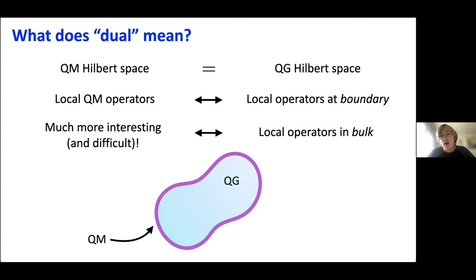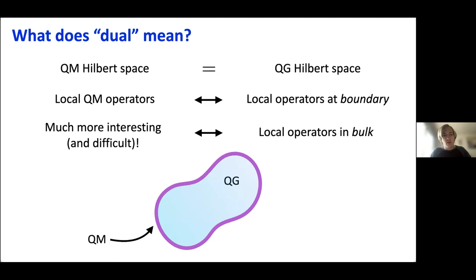So what does 'dual' mean in this context? It's quite a strong statement: the Hilbert space of the quantum mechanical theory is precisely equal to the Hilbert space of the quantum gravity theory. The quantum gravity Hilbert space includes states that contain different spacetime geometries. If the Hilbert spaces are equal, in principle we can also map operators from one theory to operators in the other. This correspondence is simplest to state for operators on the boundary — a local operator in my quantum mechanical theory maps to a local operator at the boundary of the higher dimensional gravity theory.